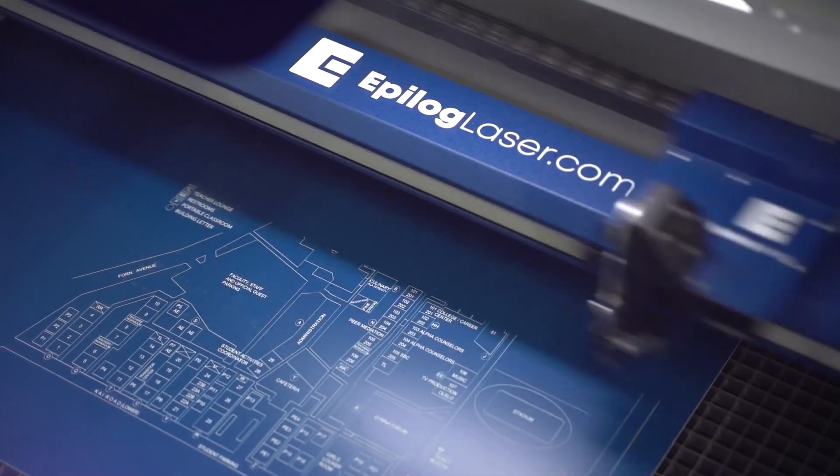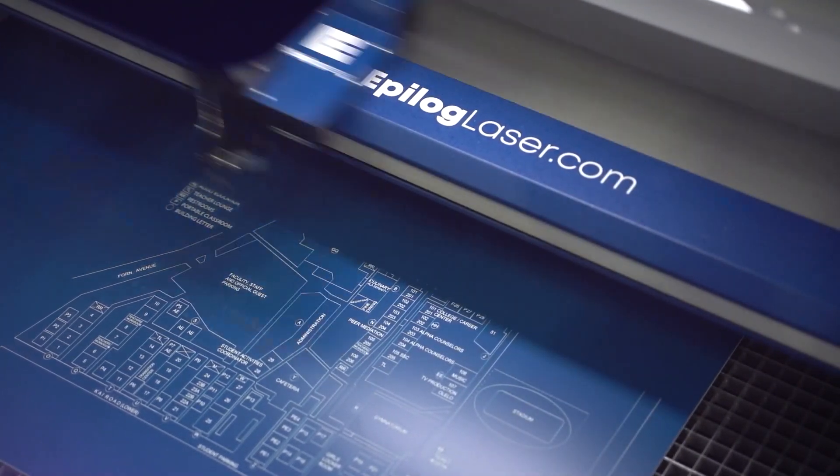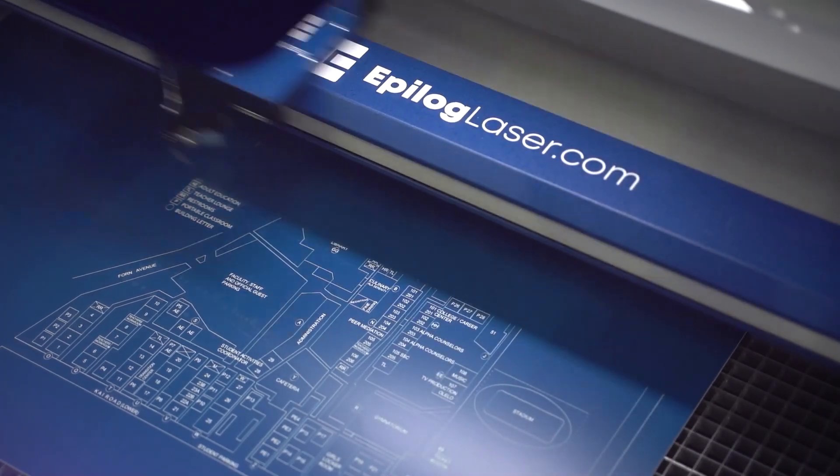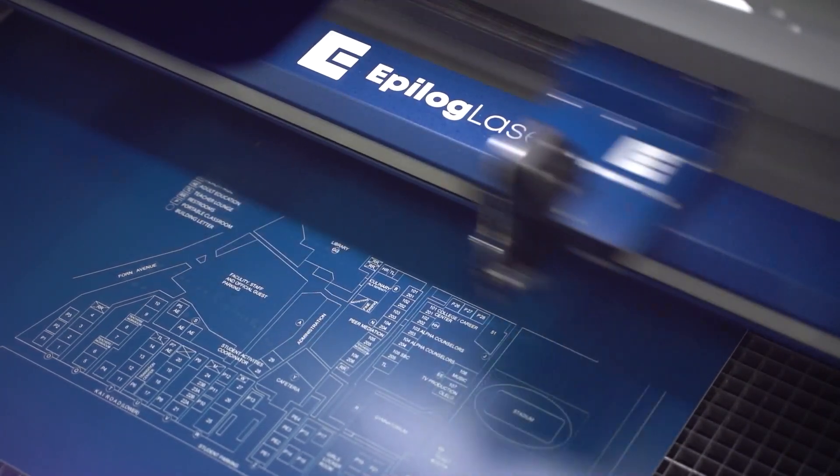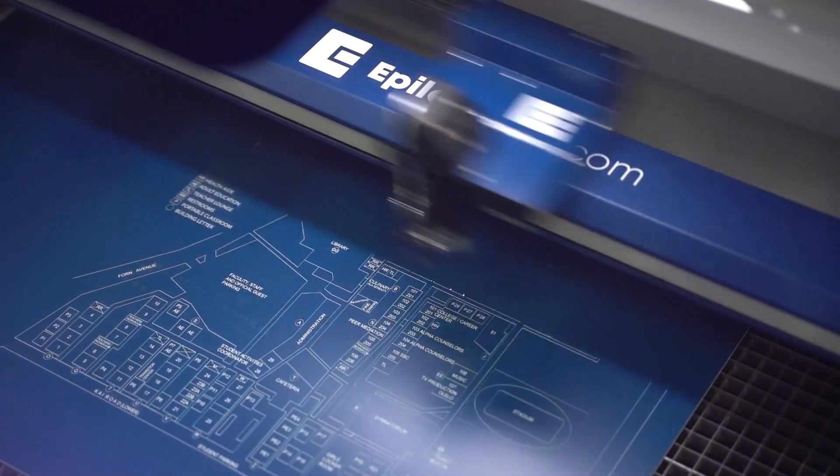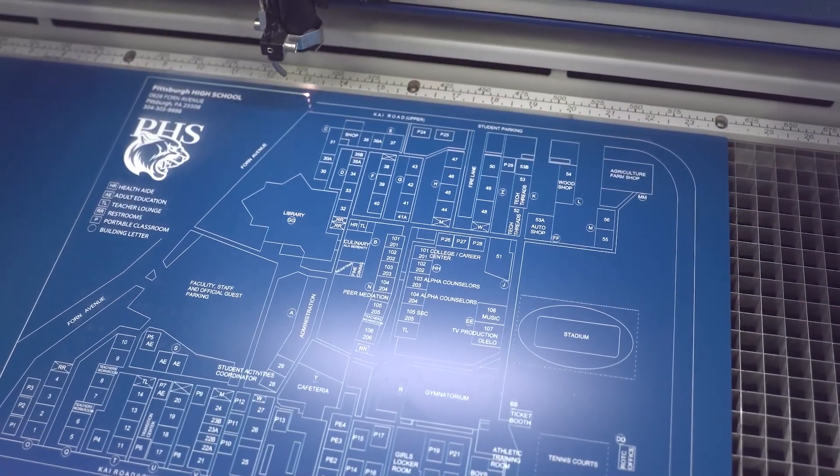We're able to achieve some significant contrast with our engraving, even with small text and details. The machine runs the engraving process first, then moves on to the cutting stage.